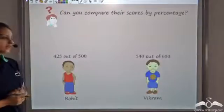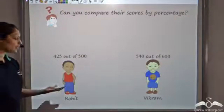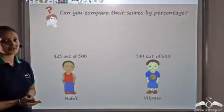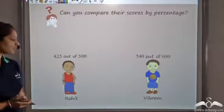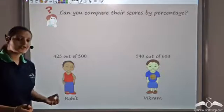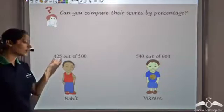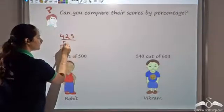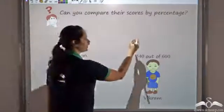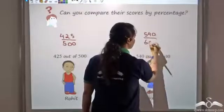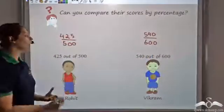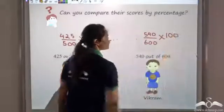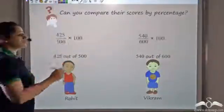Now let's see whether you can find the percentage of scores for both of them. Rohit has scored 425 out of 500, whereas Vikram has scored 540 out of 600. By percentage means per 100 how much they have scored. We know Rohit scored 425 out of 500 and Vikram scored 540 out of 600. To find per 100, all we need to do is multiply each by 100.